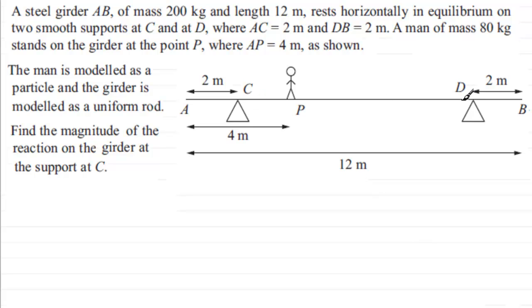Well, we've got first of all the weight of the girder, and its mass is 200 kilograms. We're assuming that the girder is modeled as a uniform rod.